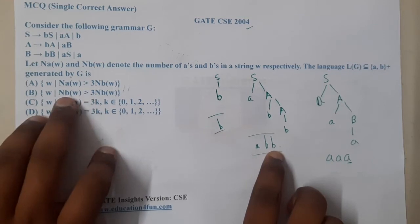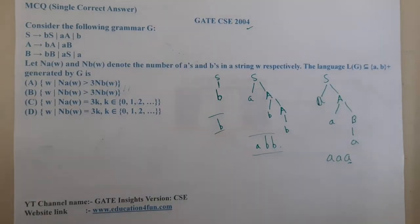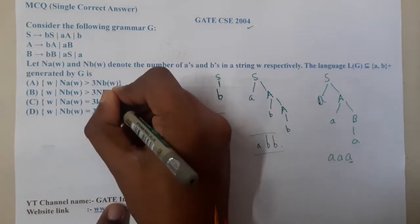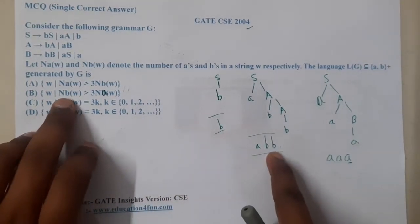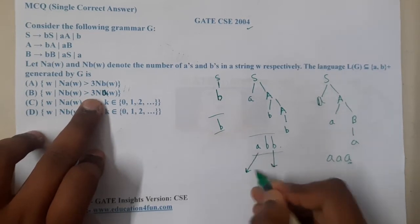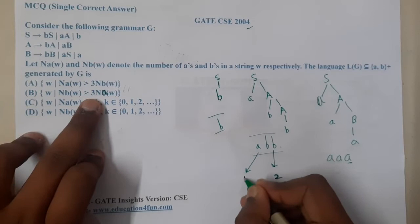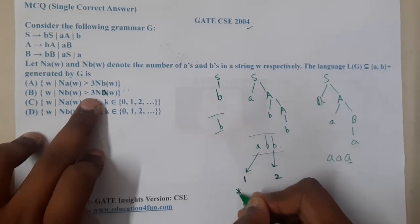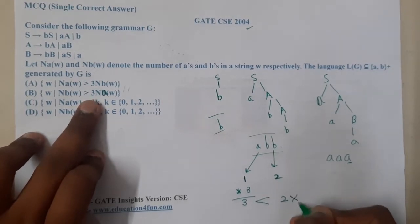When it comes to option B, option B says that length of b should be greater than three times... It's a printing mistake. Length of b's should be greater than three times of length of a. So basically if I apply that formula here, I am having length of b's as two and length of a as one. So if I multiply three here, I am going to get three here and two here. So two is never greater than this. Hence I can conclude that B is wrong.